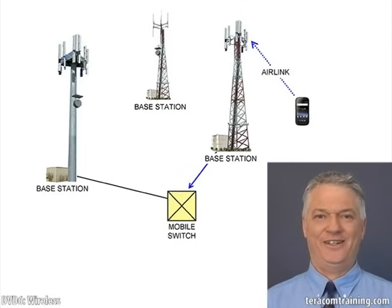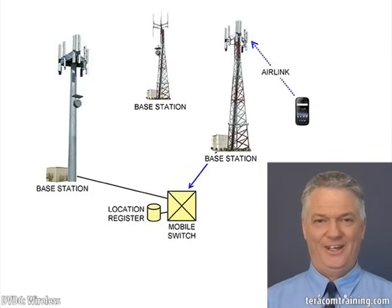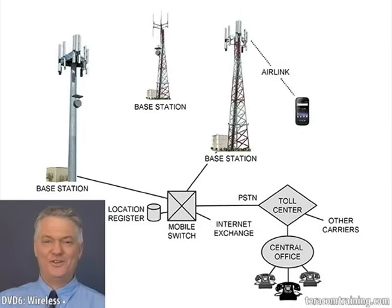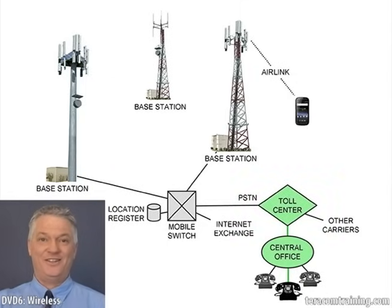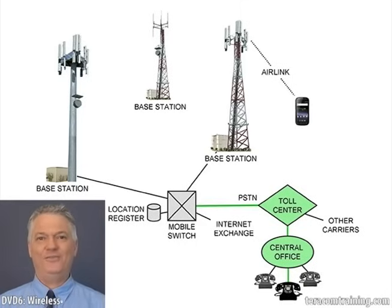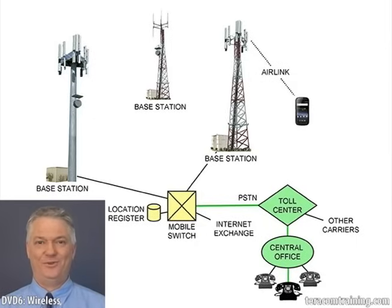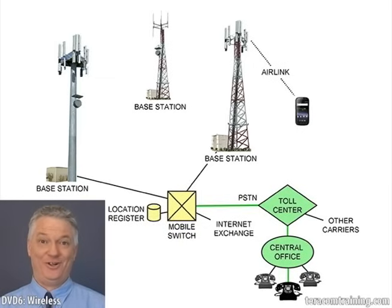If somebody calls you from a landline, they pick up the phone and punch in some numbers. That call goes over their loop to their central office, to a toll center, and then to the cellular telephone company — which looks like a central office to the telephone system. The phone call is terminated on the mobile switch, which then looks in the location register to see which base station that phone last registered on — that is, what location area identity it reported last time it talked to the switch. The switch then sends out a page on that base station.